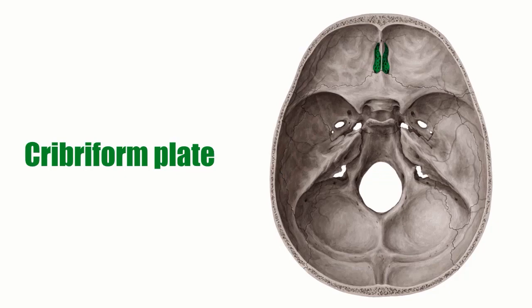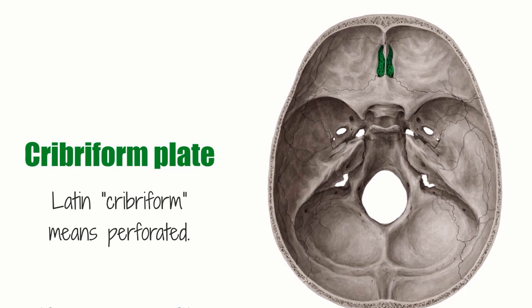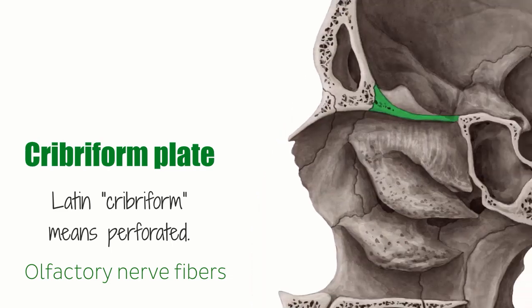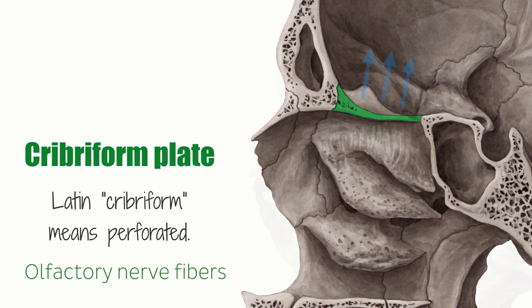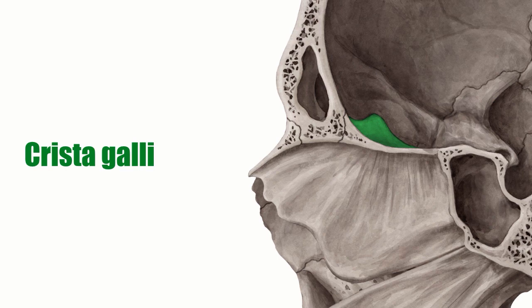The cribriform plate lies within the ethmoid notch of the frontal bone and forms the roof of the nasal cavity. In Latin, cribriform means perforated. As the name suggests, it comprises numerous openings through which the olfactory nerve fibers from the nasal cavity pass through to the anterior cranial fossa. The falx cerebri is attached to the crista galli, which is this small vertical protrusion on top of the plate seen here highlighted in green. The olfactory bulb lies on two grooves lateral to the crista galli.